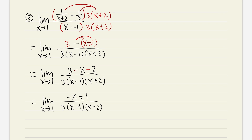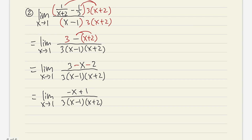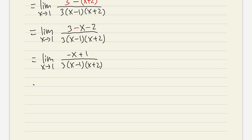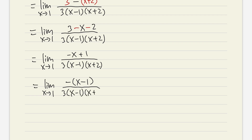Looking at what we have, negative x plus 1 on top and x minus 1 on the bottom are almost the same but not quite. What we can do is factor out a negative on the top, giving us negative times (x minus 1). This is correct because distributing gives negative x plus 1, just like before. Now the x minus 1 on top and x minus 1 on the bottom cancel. Just relax and have patience — this is like doing yoga. The x minus 1 cancels, just as I told you it would.